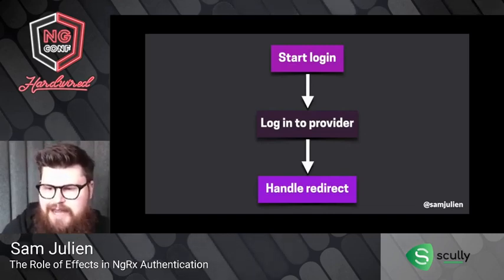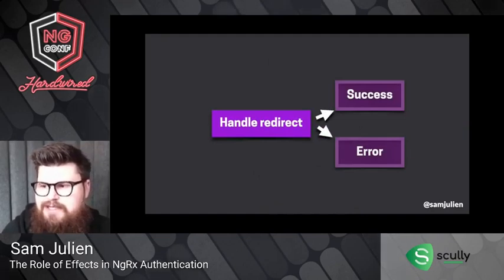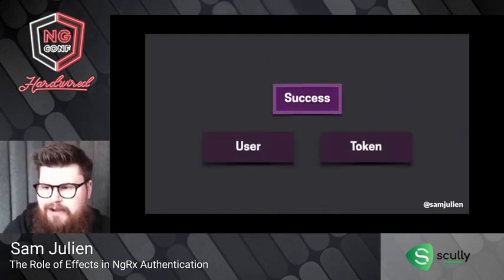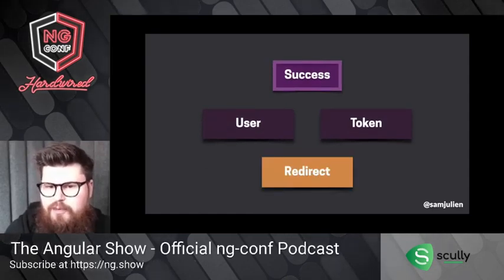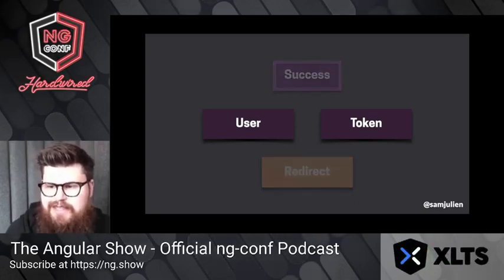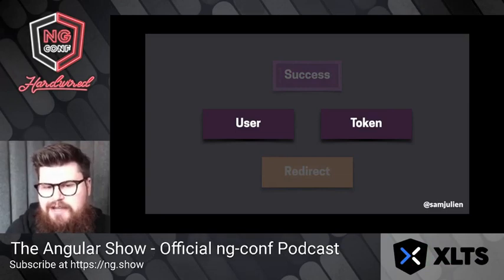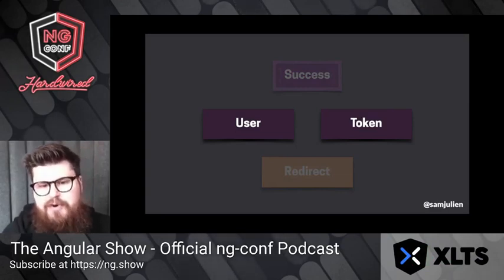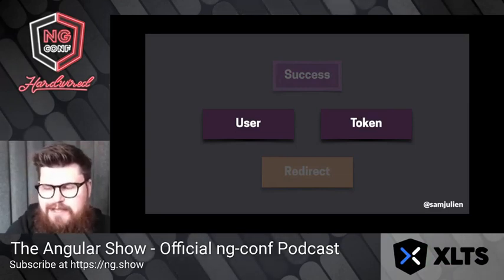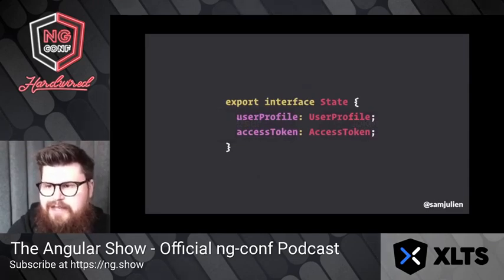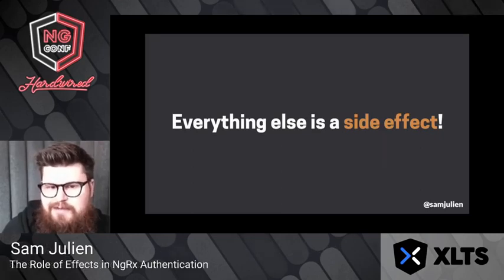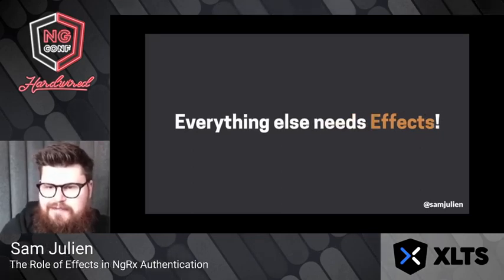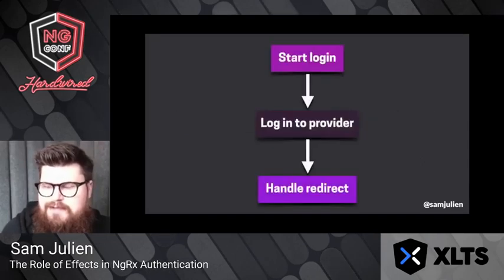I have a challenge for you: as we go through the auth flow again, think about which parts of it directly change state. We kick off login, get sent to the provider, get sent back to handle the redirect, process the success or error, get our user and token, and send the user on their way. Which parts actually update state? Really only the part where we get the user and the token — everything else in this process is a side effect, which means everything else needs effects.